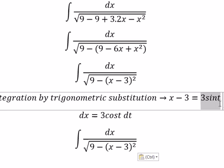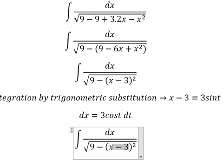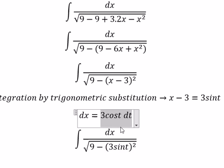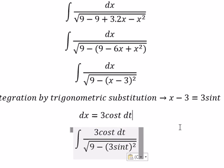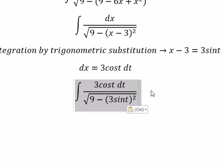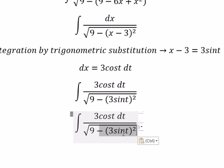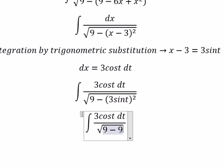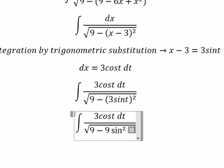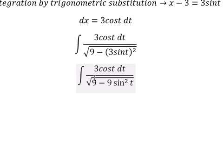So we put this one in here. The x we change for this one. So this one we got 9 sine t square. The square root of 9, you got 3.